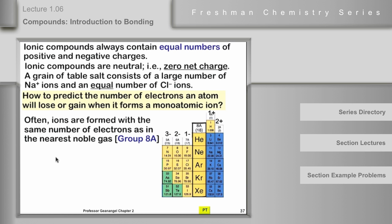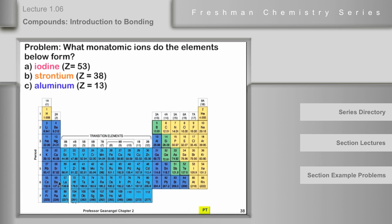So let's do a problem. If you have that in mind, let's do this problem. What monatomic ions do the elements below form? What's monatomic mean? One, based on one atom.